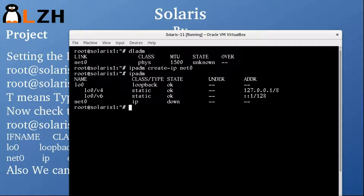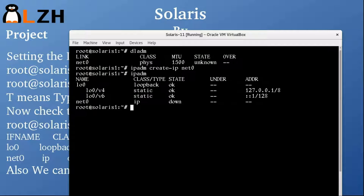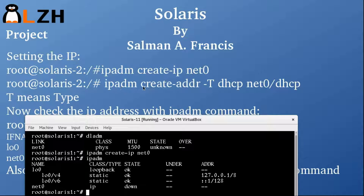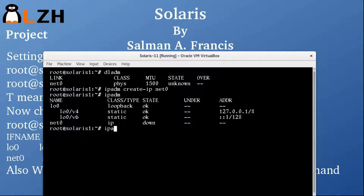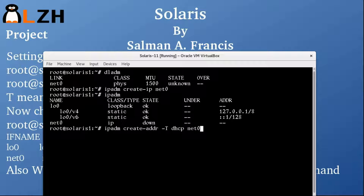Since we want DHCP, we use the command IPADM create-addr -T DHCP net0. The -T flag means the type. You can also mention it with a forward slash DHCP, but this will also work. Press enter and it's trying to get its IP address.